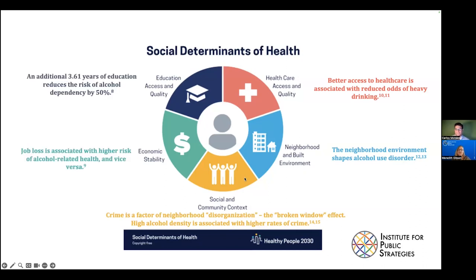For social and community context: individuals who have higher levels of social support and community cohesion generally are thought to be healthier because they have better links to basic health information, better access to health services, and greater financial support with medical costs.